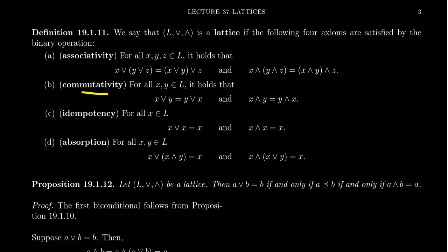We also require that both operations are commutative. So for any elements x and y inside the lattice, we require that x join y is equal to y join x, and x meet y is equal to y meet x. So both of these operations are commutative.